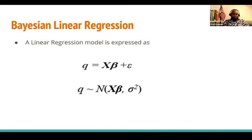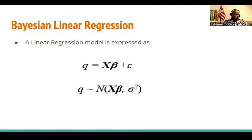Not only that — the model parameters are also going to be sampled from given probability distributions. And unlike in the conventional linear regression where the data completely informs us about a model, in the case of Bayesian linear regression, we believe there exists uncertainty in the model.